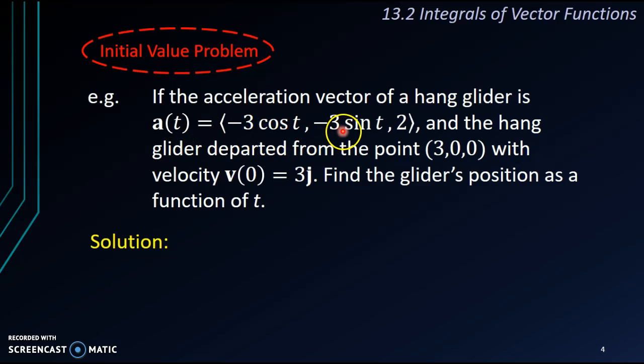which is (-3 cos t, -3 sin t, 2), and the hang glider departed from the point (3,0,0) with velocity v(0) equals to 3j, find the glider's position as a function of t. Well, you see, from the acceleration, you want to get to the position. But before you get to the position,